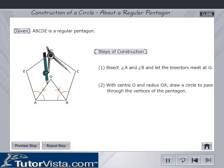With O as the center and radius equal to OA, draw a circle to pass through the vertices of the pentagon. This is the required circle about the pentagon ABCDE.